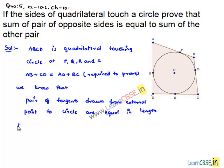Consider each and every point. Initially, let us consider from point A. From point A, AP and AS are two tangents, so those lengths will be equal. Let this be as equation number one. From point B, BP and BQ are two tangents. Their lengths will be also equal. Let this be a second equation.